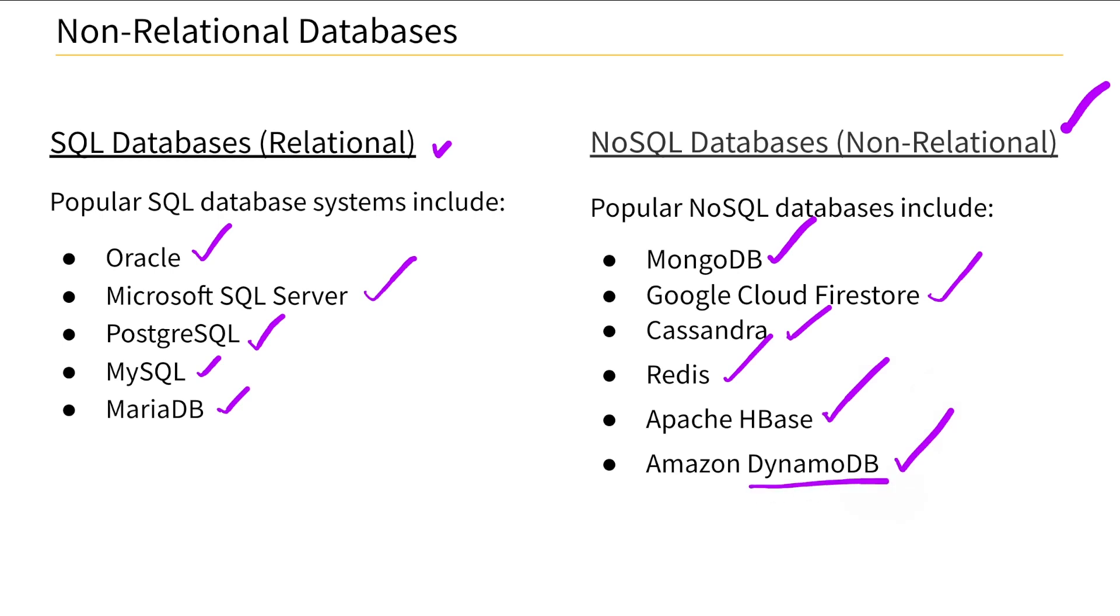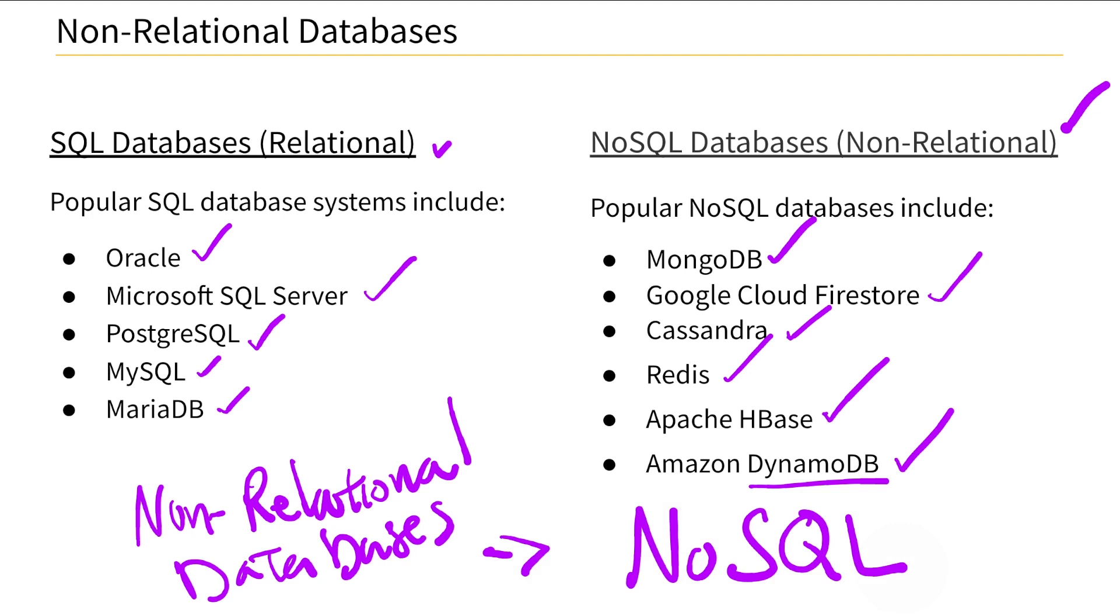We already talked about this - while most of the databases in use today are relational databases that use tables and rows and columns, there are other kinds of databases. And that's what we're talking about, non-relational databases, also known as NoSQL.